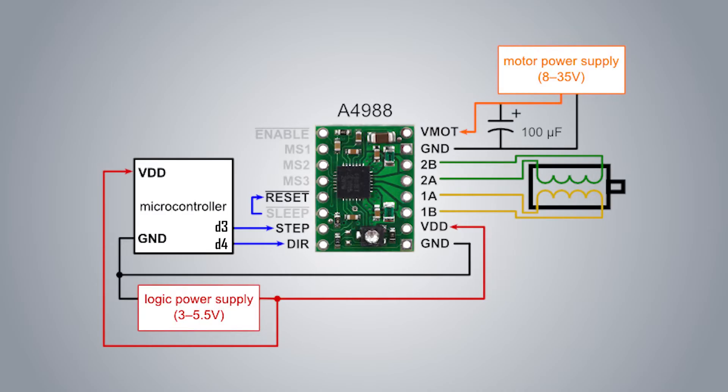The A4988 stepper driver module has a total of 16 pins. The VMOT and ground pins are for the external power for the motor. You cannot power the motor from the Arduino as it requires a minimum of 8-35 volts. I would recommend using a 12 volt 2 amp external power supply.